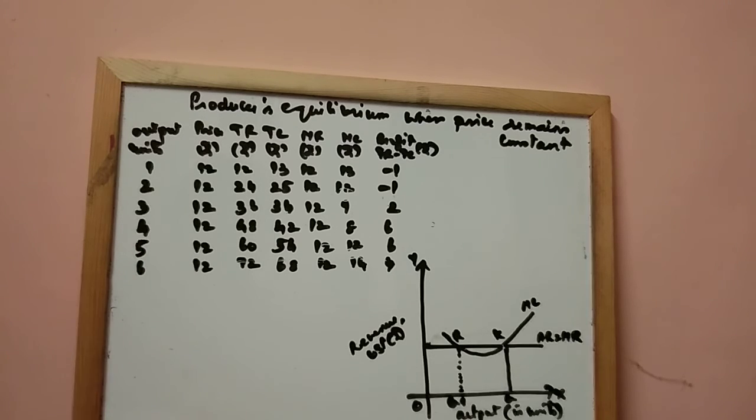Now, look at the diagram. See, in this diagram, you find output is represented on X-axis, revenue and cost on Y-axis. Both AR and MR curves are straight line parallel to X-axis because the price remains constant. MC curve is U-shaped.